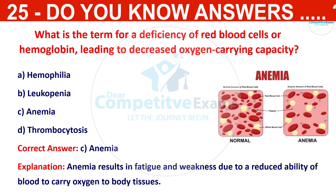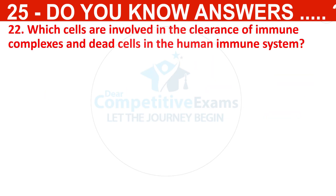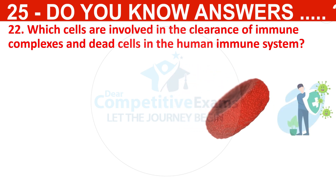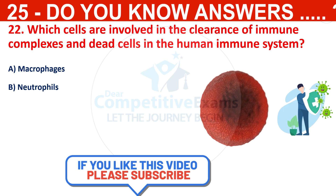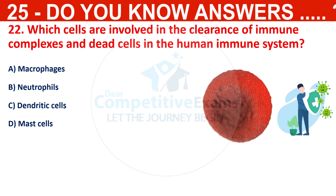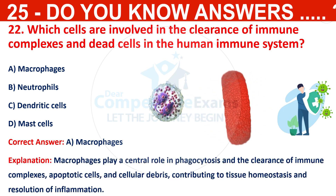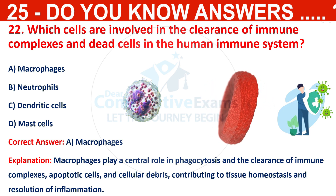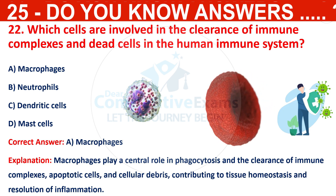Which cells are involved in the clearance of immune complexes and dead cells in the human immune system? The options are macrophages, neutrophils, dendritic cells, or mast cells. The correct answer is macrophages. Macrophages play a central role in phagocytosis and the clearance of immune complexes, apoptotic cells, and cellular debris, contributing to tissue homeostasis and resolution of inflammation.